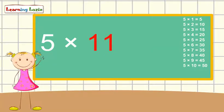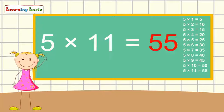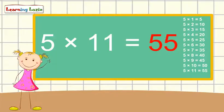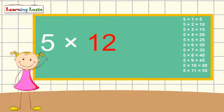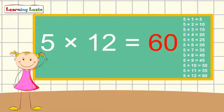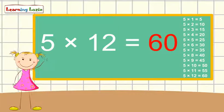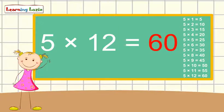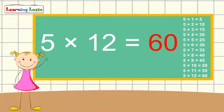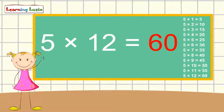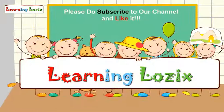five times eleven is fifty-five, five times twelve is sixty. The table five song, learn it and sing it along.